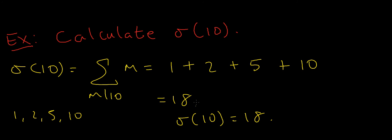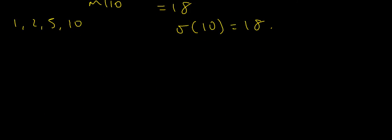We just look at all the divisors of our argument—in this case, the natural number 10—and sum the divisors. Let's look at a slightly trickier example.